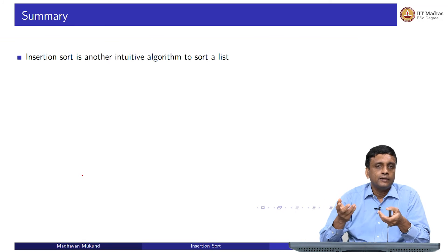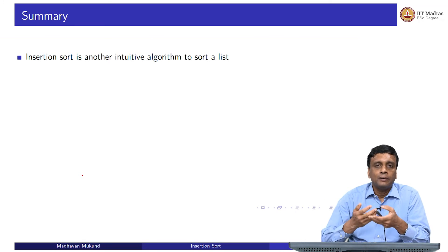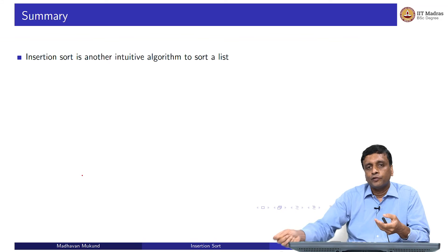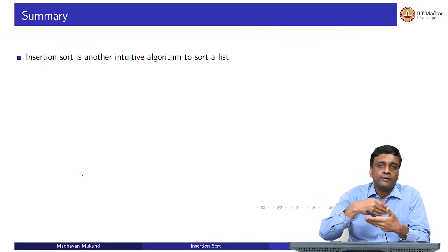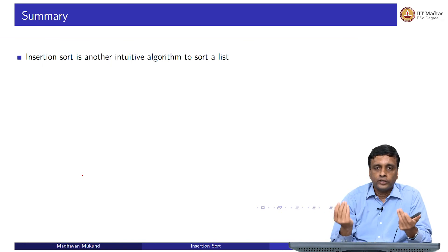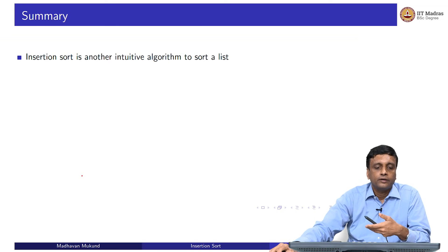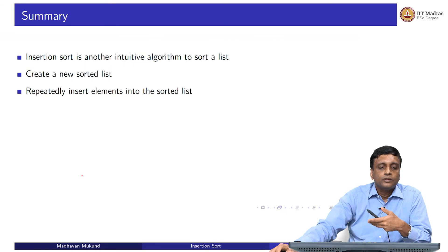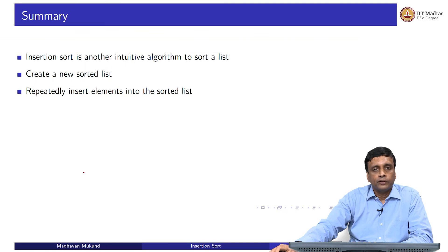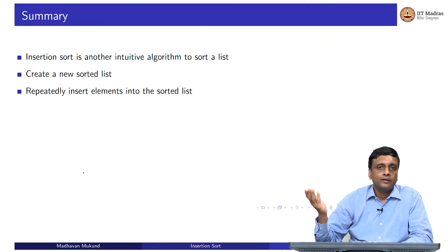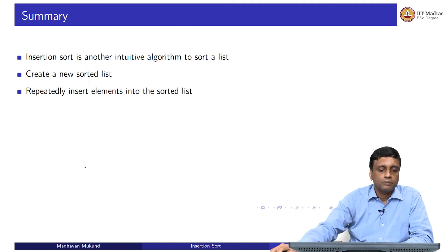To summarize, insertion sort and selection sort are both intuitive algorithms that we use quite naturally. Insertion sort is typically the kind of algorithm used when playing cards: you pick up a card and put it into the correct place in your already-sorted hand. In both cases you create a new sorted list, but unlike selection sort where the sorted list is built up automatically, in insertion sort you have to correctly insert each element in the correct place. The worst-case complexity is O(n²).